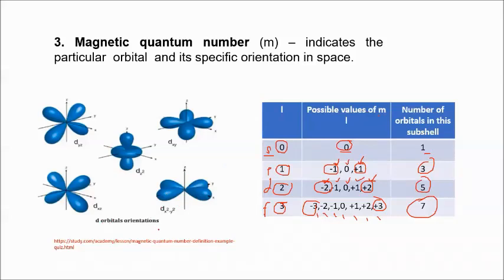For D orbital orientation, the D sub-shell has 5 orbitals: Dyz, Dz², Dxy, Dx²−y², and Dxz.